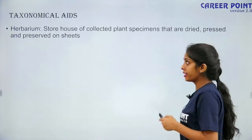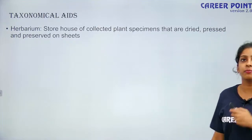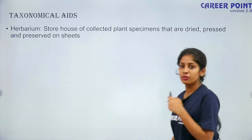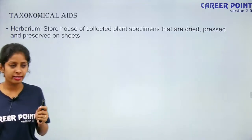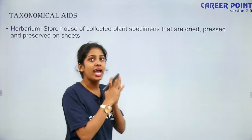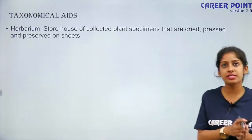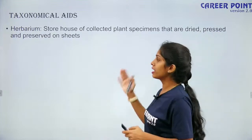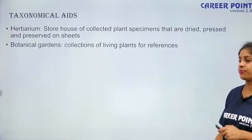The first one is herbarium — it is basically a storehouse of collected plant specimens that are dried, pressed, and preserved on sheets. You take a particular leaf sample, dehydrate it, paste it on a piece of paper, label it, write the name, and preserve it for future generations. That kind of taxonomical aid is called a herbarium.